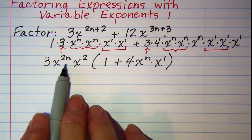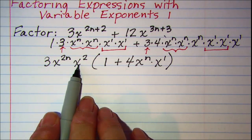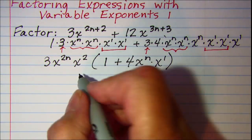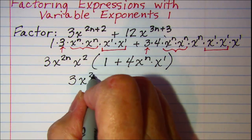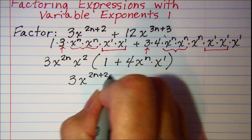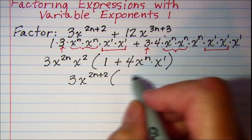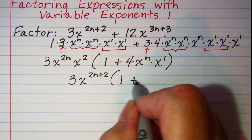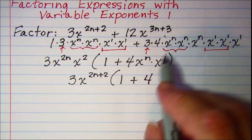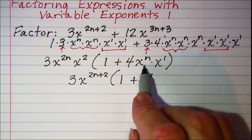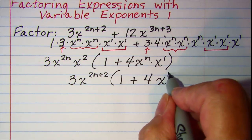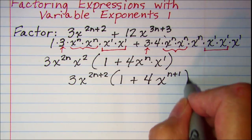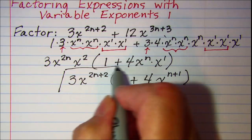Since these are both a base of x, I can add these exponents. So out in front I have 3 times x to the 2n plus 2, and then in the parentheses I have 1 plus 4, and then again the bases are both x so I can add the exponents. x to the n plus 1. So this is my factored form.